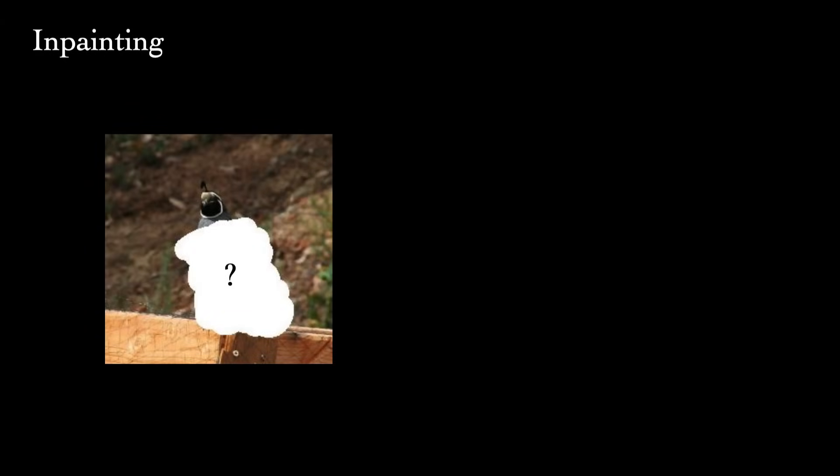Inpainting is another conditional generation problem where diffusion models have had success. The naive way to perform inpainting with diffusion models is to take a model trained in the standard way, and at inference time, replace known regions of an image with a sample from the forward process after each reverse step. Now, this works okay, but can lead to edge artifacts. The model is not being made aware of the full surrounding context, only a hazy version of it.